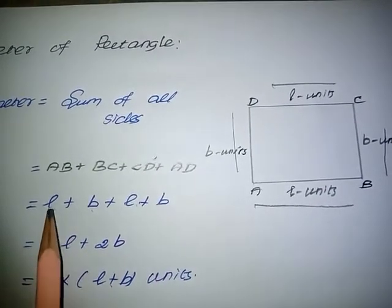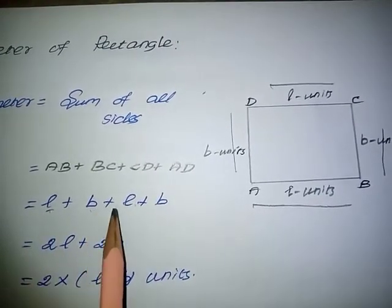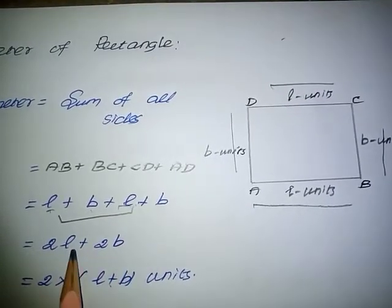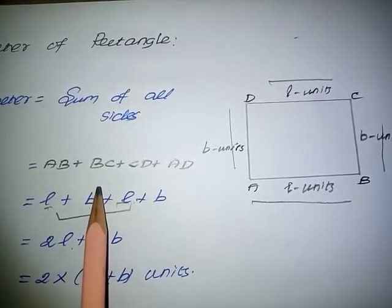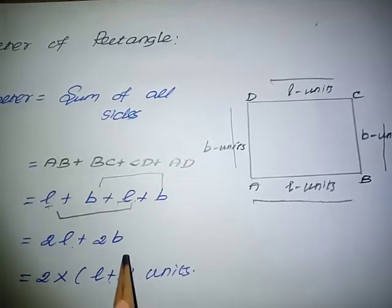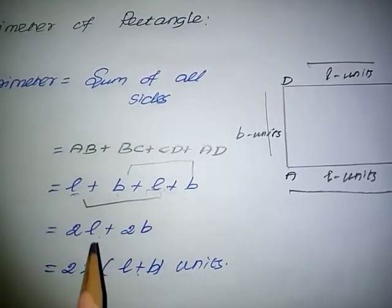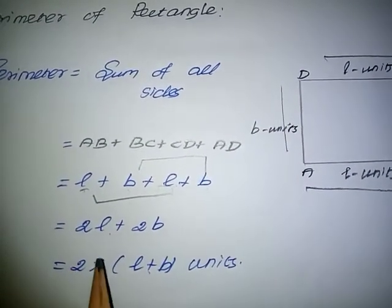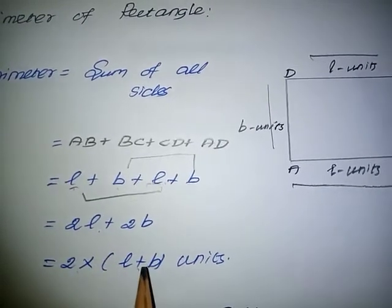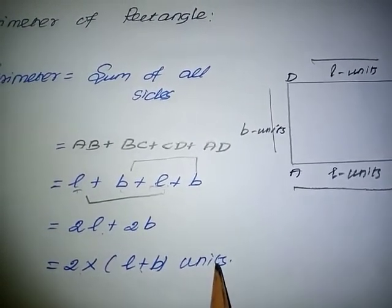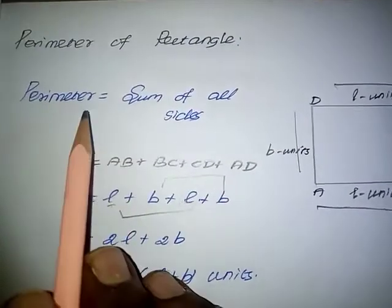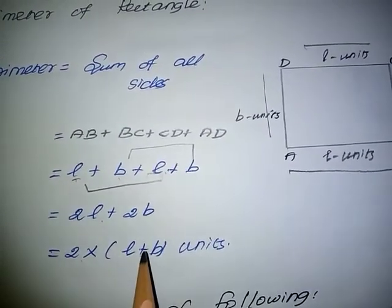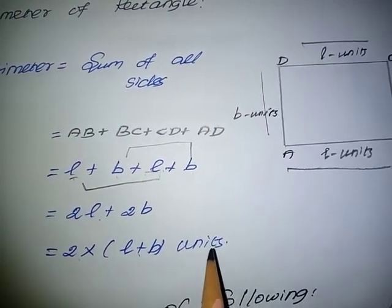Here L and L together give 2L, and B plus B equals 2B. Since 2 is common, we take it outside. So, perimeter equals 2 into (L plus B) units. Therefore, the perimeter of a rectangle equals 2(L + B) units.